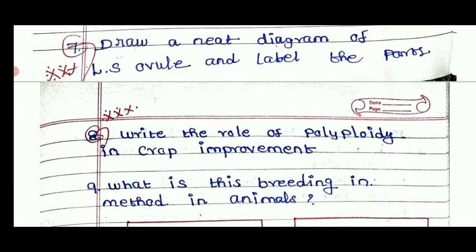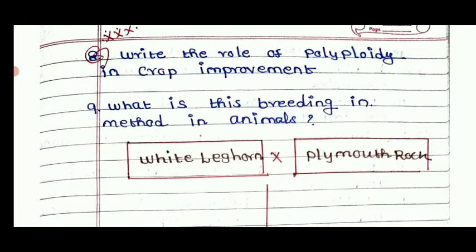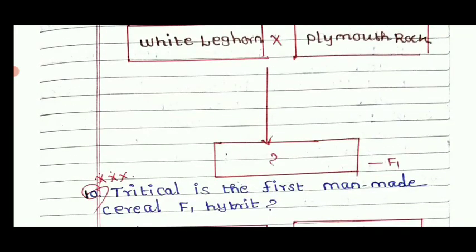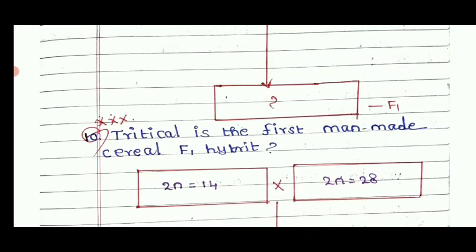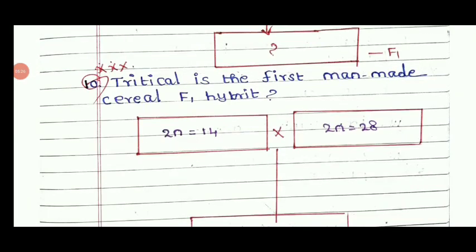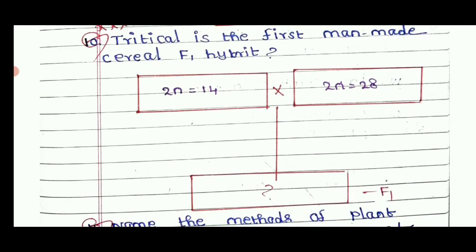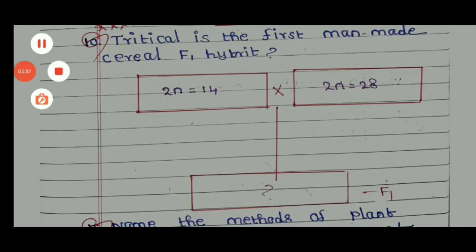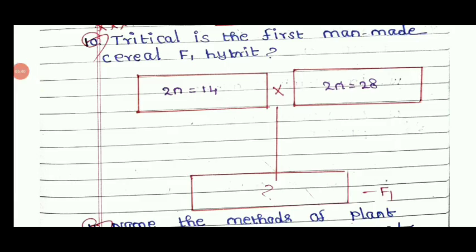Discuss the role of polyploidy in crop improvement. What is inbreeding and breeding methods in animals? Triticale is the first man-made cereal — F1 hybrid with 2n equal to 40 and 2n equal to 28, so we look at the F1 generation. You can see this in 4-mark and 7-mark questions.